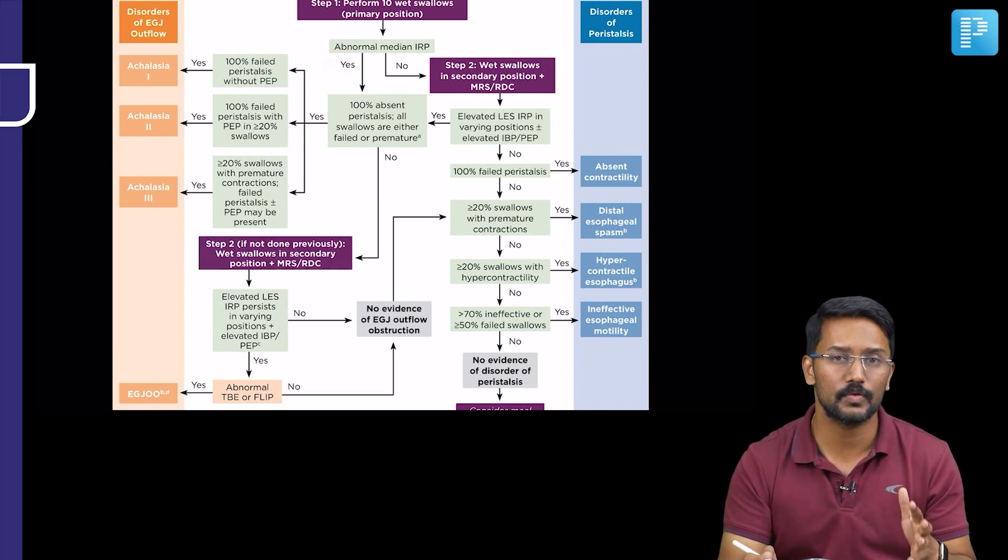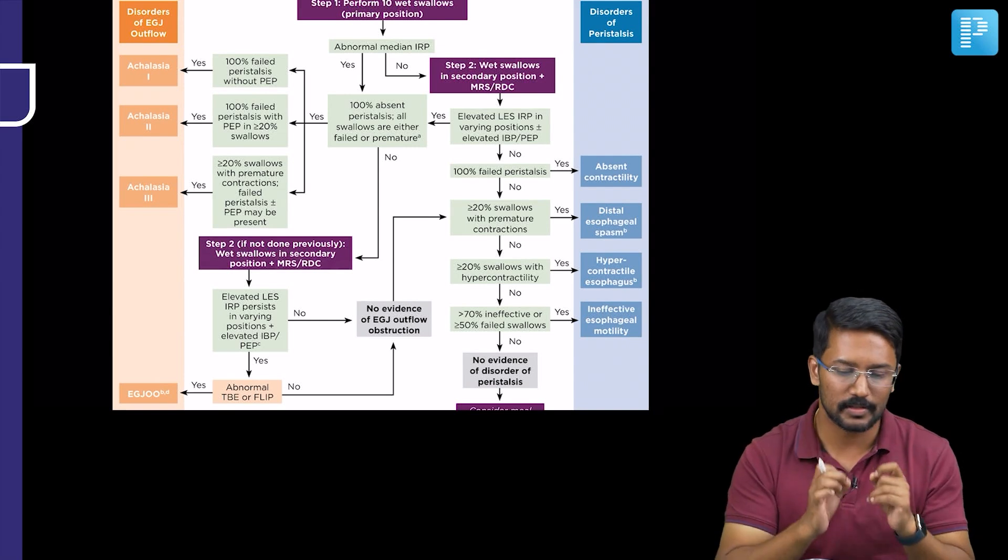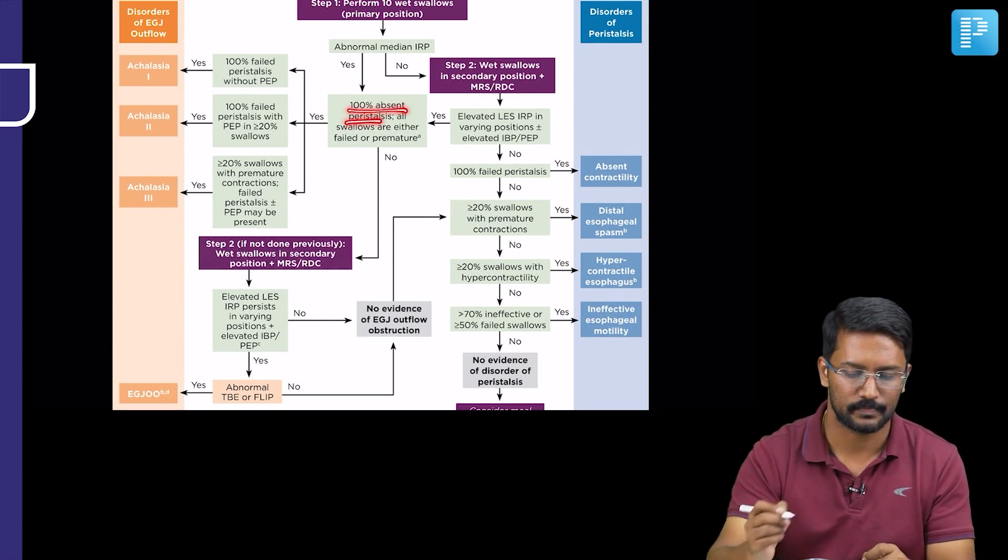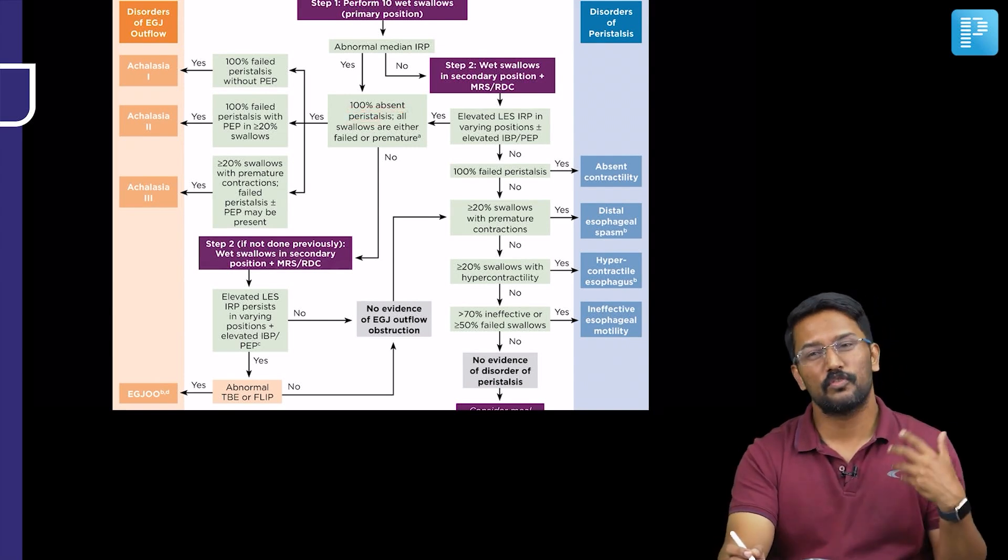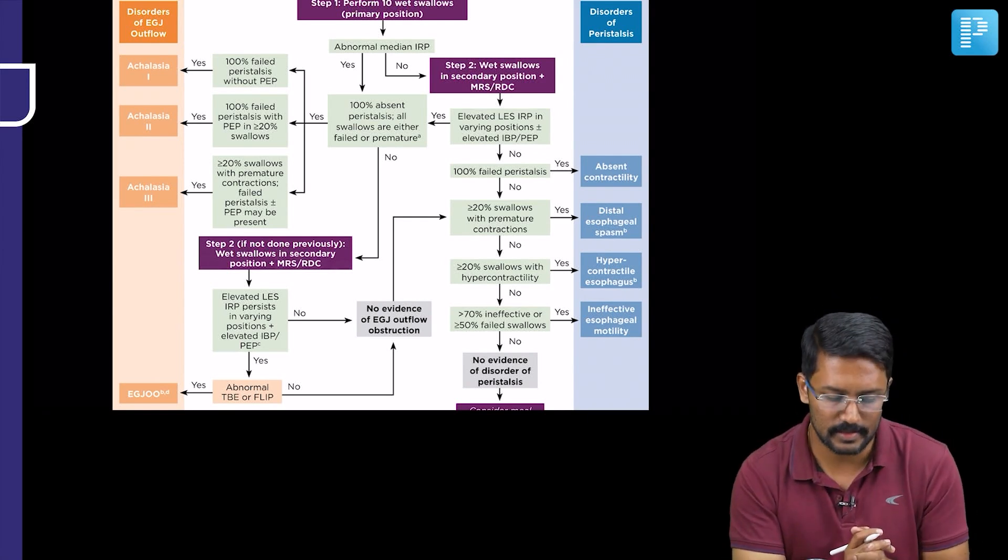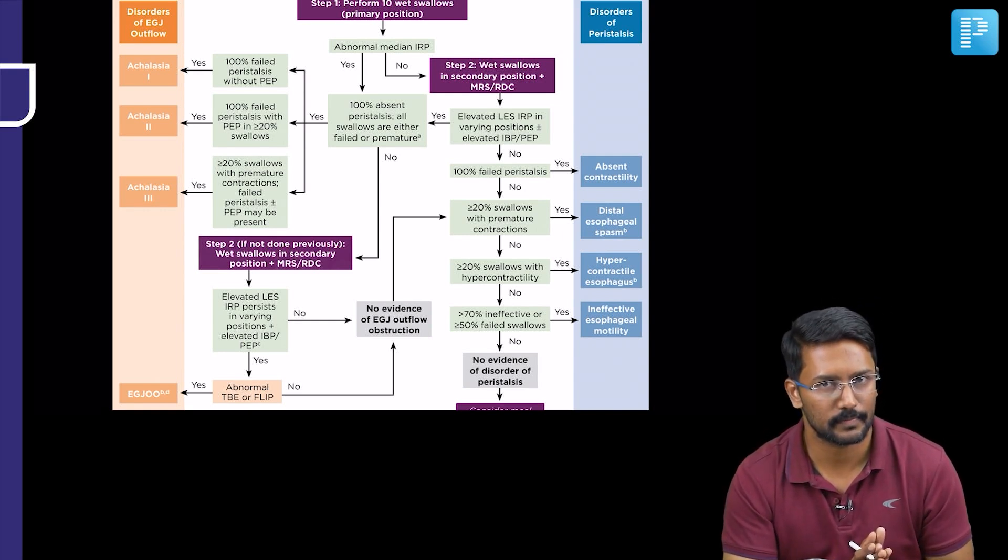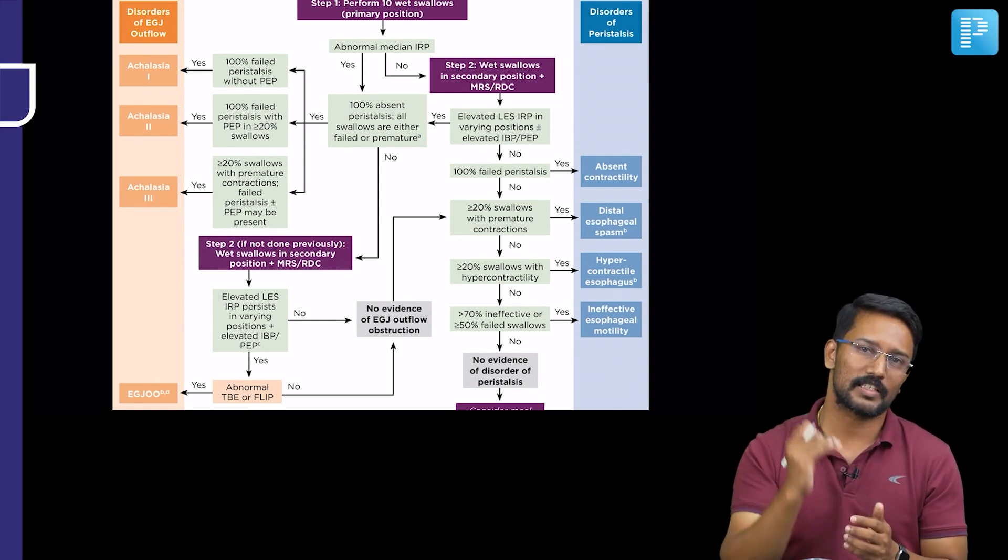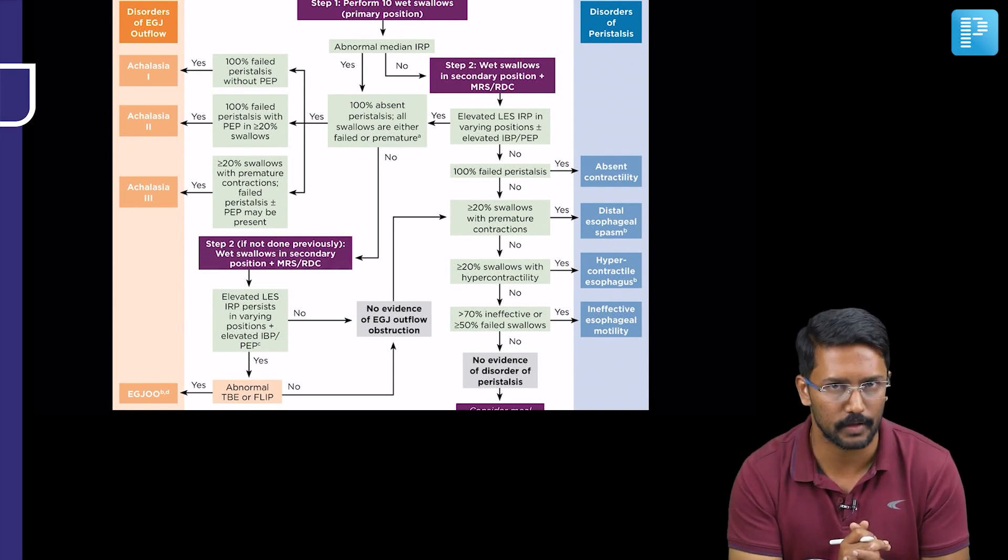the next thing to see from the manometry is whether there is 100 percent absent peristalsis. All the swallows fail or they are premature, if the answer for this is yes, then you are mostly thinking about achalasia cardia. Then you need additional information to classify them into three categories, which I have already given out to you.